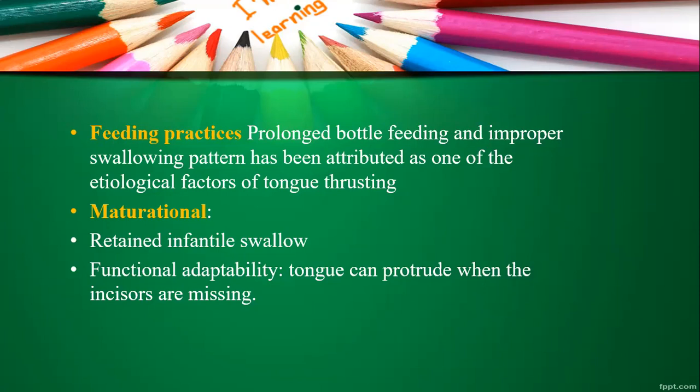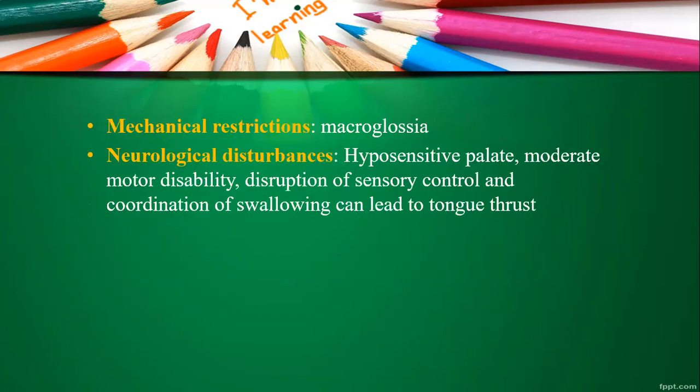Functional adaptability means the tongue can protrude when incisors are missing. If there is long-term absence of anterior teeth, the tongue will gradually adopt a position leading to tongue thrusting habit. Mechanical restrictions include macroglossia, neurological disturbances like hypersensitive palate, moderate motor disability, and defective sensory control and coordination during swallowing, all of which can lead to tongue thrust.